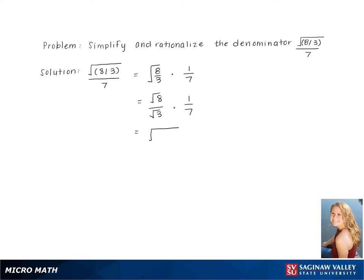This gives us the square root of 2 times 2 times 2 over the square root of 3 times 7. Pulling out a pair of twos gives us 2 square root 2 on the top and 7 square root 3 on the bottom.